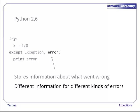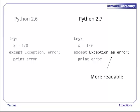Exactly what information is recorded depends on what kind of error occurred. Python's documentation describes the properties of each type of error in detail, but we can always just print the exception object. Python 2.7 and higher allow us to make this a bit more readable using the keyword as. The old style still works, but most new code is written using the new syntax.